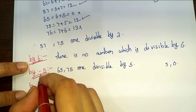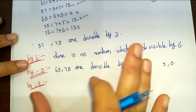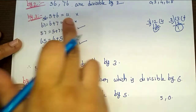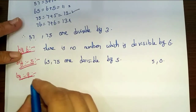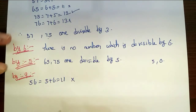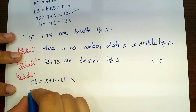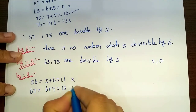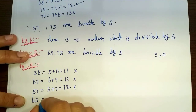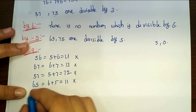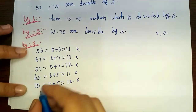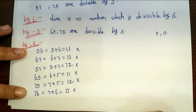Next, divisibility rule by 9: sum the digits and check if divisible by 9. For 56: 5 plus 6 equals 11, not divisible by 9. For 67: 6 plus 7 equals 13, not divisible. For 65: 6 plus 5 equals 11, not divisible. For 75: 7 plus 5 equals 12, not divisible. For 76: 7 plus 6 equals 13, not divisible by 9.